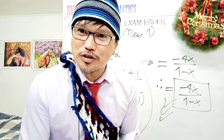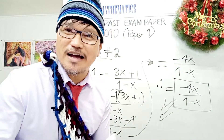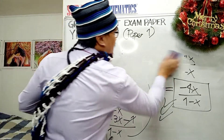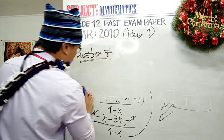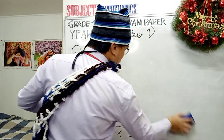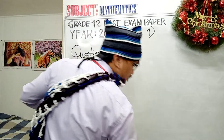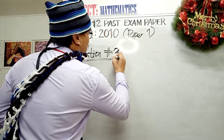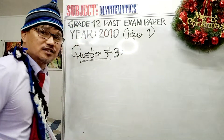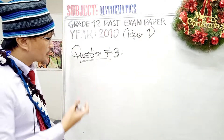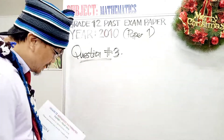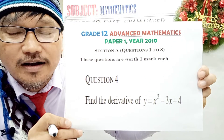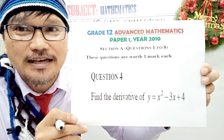Now let's move on to question number four for the grade 12 advanced mathematics students. Let me first erase question number two. We are now into question number four. I have to skip question number three because it's a true or false question — I want to make sure that when you spend time watching the video, you are going to get something from this. The question number four is from the grade 12 advanced mathematics paper one, year 2010.